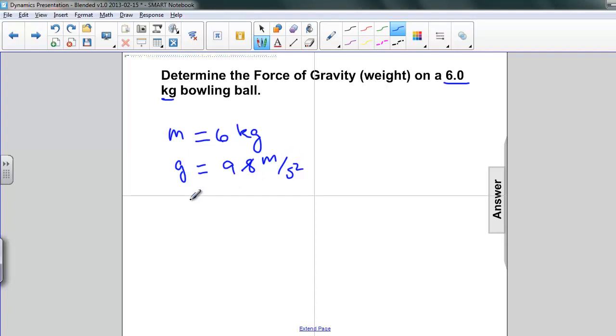Now, since we're asked to find the weight, we're not going to worry about the direction of it. Normally, I would say that g is pointing down and I would put a negative sign on it. But generally, when we talk about weight, we're talking about the magnitude of the force. So I'm going to use w equals mg.